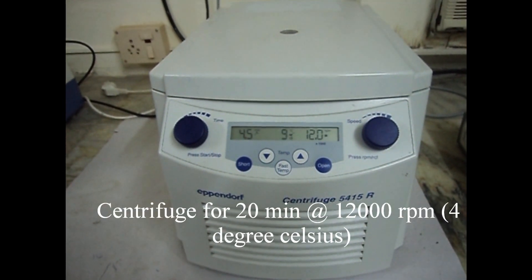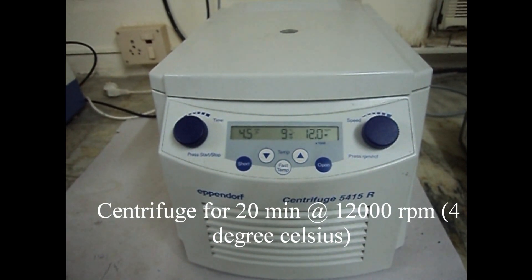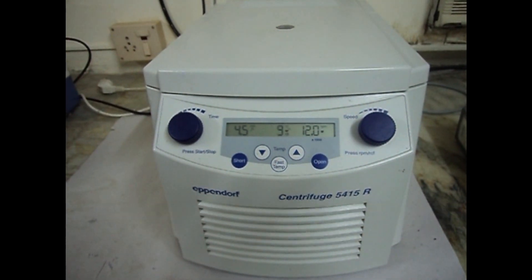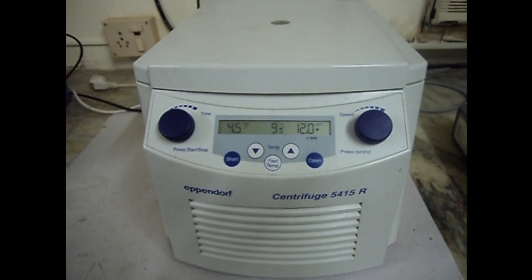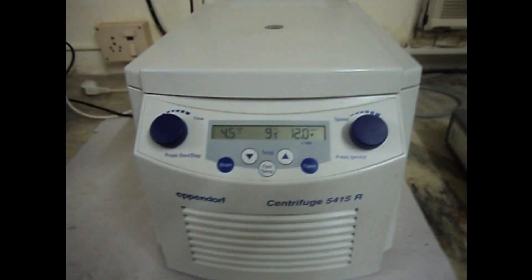Centrifuge 20 minutes at 12,000 RPM at 4 degrees Celsius in a microcentrifuge. Remove the tubes from the centrifuge and place on ice. Discard the pellet.